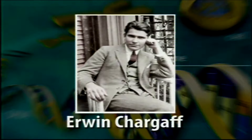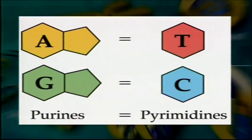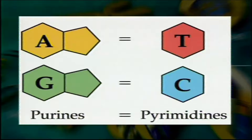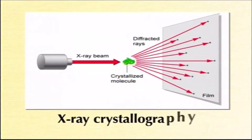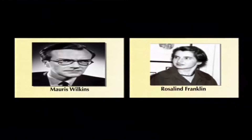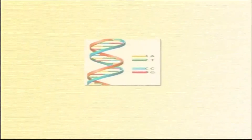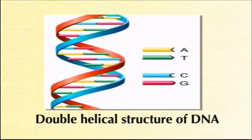In 1950, Chargaff developed the principle of base pairing. He determined the relative amounts of adenine, thymine, cytosine, and guanine in a variety of cells and proved that adenine equals thymine, and cytosine equals guanine, and that there is exactly as much purine — adenine and guanine — in the nucleus as there is pyrimidine — thymine and cytosine.